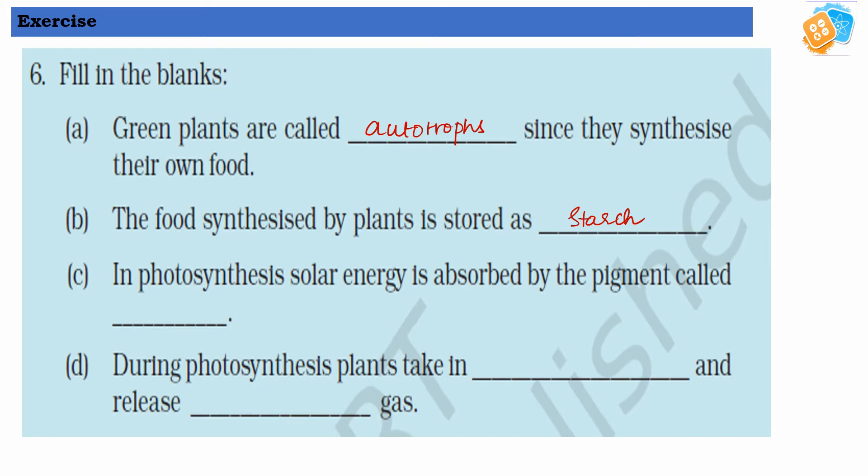(C) In photosynthesis, solar energy is absorbed by the pigment called chlorophyll. Chlorophyll is a green color pigment present in the leaves, and leaves take in solar energy with the help of chlorophyll.